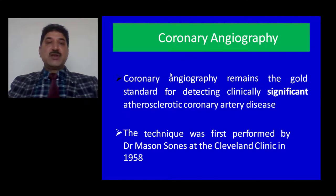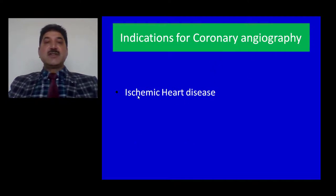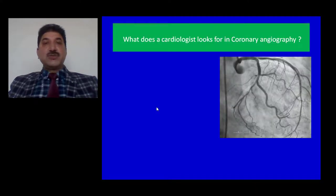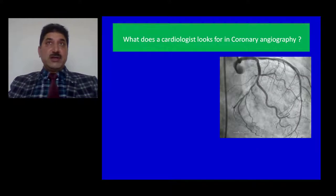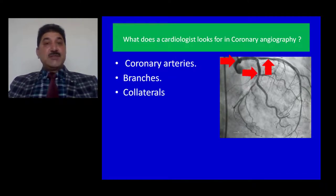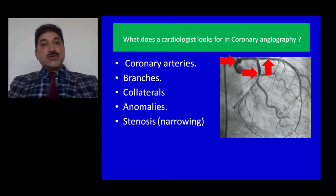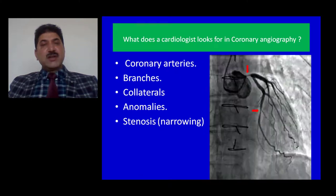What is coronary angiography? Coronary angiography remains the gold standard for detecting clinically significant atherosclerotic coronary artery disease. This technique was first performed by Dr. Mason in 1959. The indication for coronary angiography is ischemic heart disease. As medical students, you should know the branches of the coronary artery at dissection, but you should also be able to interpret a coronary angiogram. The cardiologist looks for coronary arteries, their branches, collaterals formed after infarction, stenosis — that is narrowing of the vessel — and congenital anomalies. As already noted, coronary arteries are not anatomical end-arteries; they are functional end-arteries, so there is some chance of collateral formation.